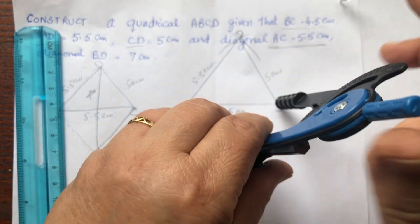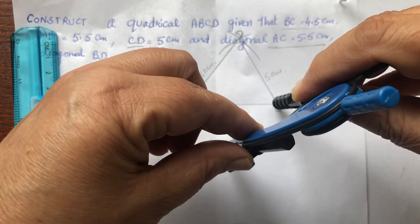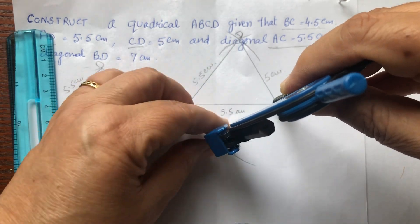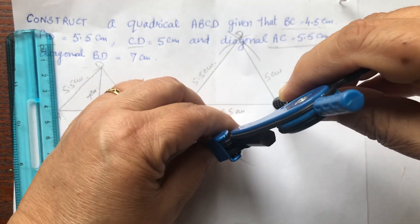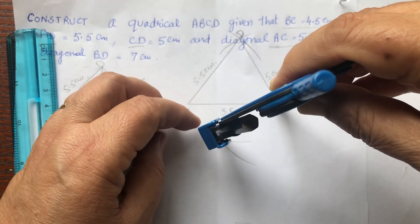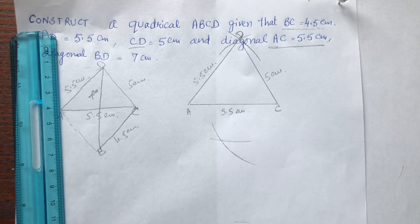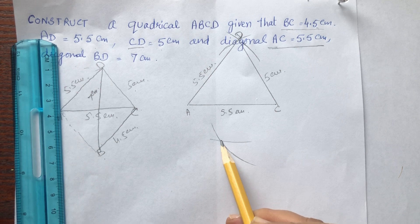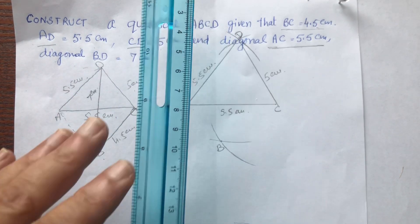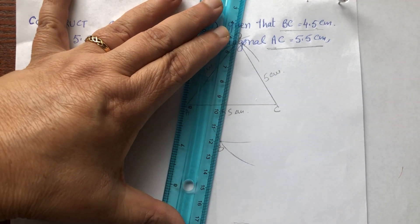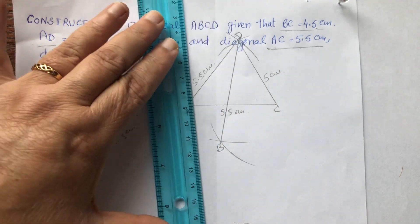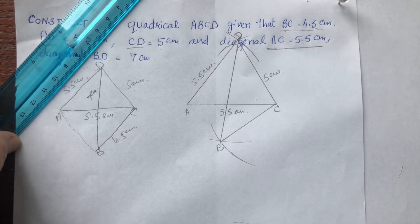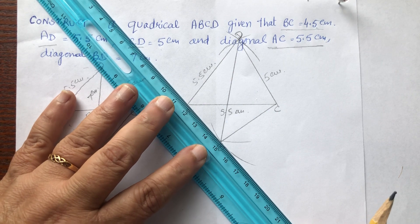The arcs are not crossing each other, so you can do the same procedure and extend if required. Check it properly. The two arcs are crossing each other — the point where the two arcs cross is the point B. Now you can join BD as well as BC.